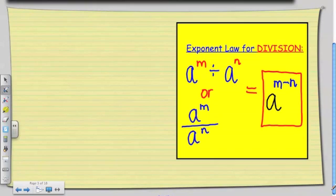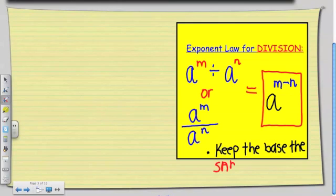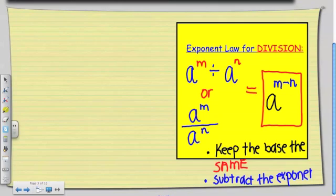So can someone tell me how am I going to write this rule? Keep the base the same. And now, what do I do with my powers, with my exponents? Subtract the exponents. We're going to subtract the exponents. So keep the base the same and we're going to subtract the exponents.